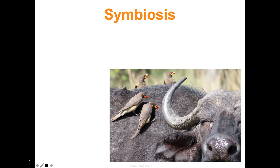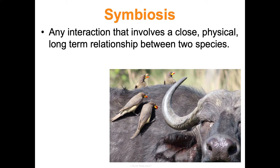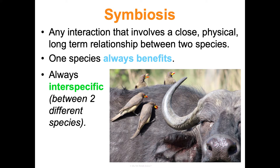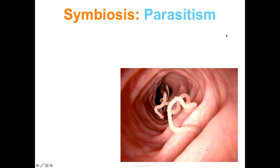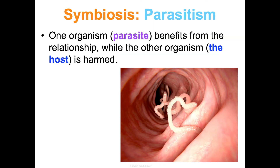Symbiosis is any interaction involving a close, physical, long-term relationship between two species — and it's always interspecific. One species must always be benefiting. Like these oxpeckers and this buffalo, which have a symbiotic relationship where both are actually benefiting. But that's not always the case — all it takes is one organism to benefit. Parasitism is when one organism, the parasite, benefits while the other, the host, is harmed.